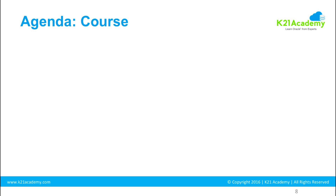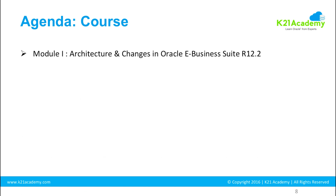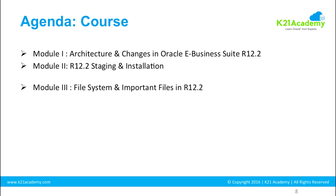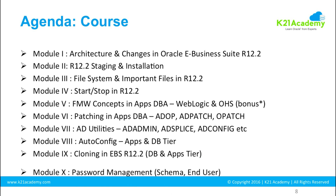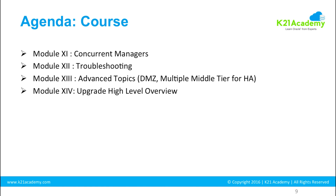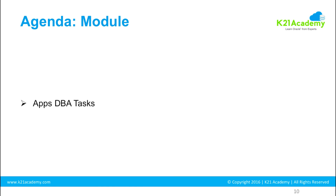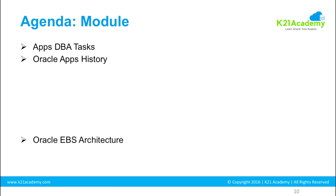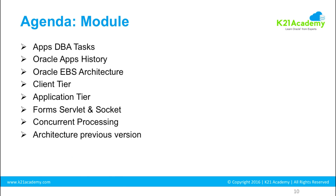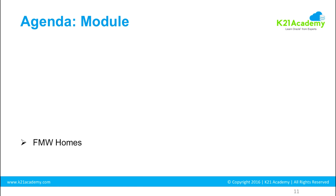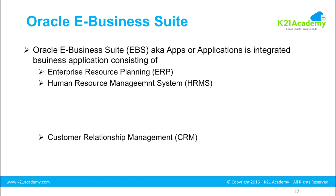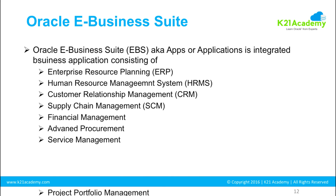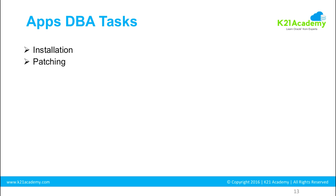We started the module in the previous lesson by covering what topics and modules we are going to cover in this course. I highlighted around 14 modules in this course, and in module one I said these are the lessons we are going to cover: Apps DBA tasks, history, architecture, and more. In the previous lesson I explained what Oracle eBusiness Suite means and the roles and responsibilities of Oracle Apps DBA.